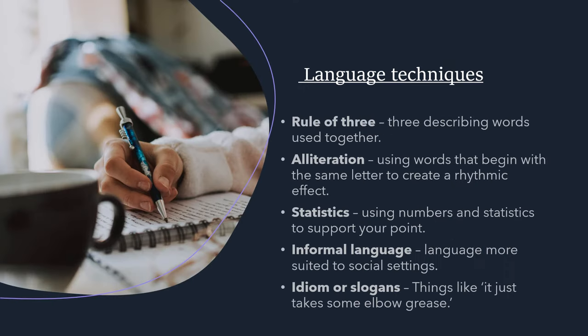Here are some language techniques you could be using. Rule of three is when you use three describing words to emphasise the feeling you're trying to get across - for example, someone is smart, funny and kind. It works best when all three words align in tone. For a negative example, you could say a restaurant was unclean, dirty and disgusting - even though those words are very similar, grouping three makes the point more powerful. Alliteration is when words begin with the same letter, creating a rhythmic effect - we see this in poetry and advertising, like Kit Kat.